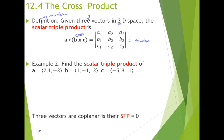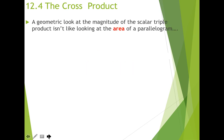How could their scalar triple product be zero? If the cross product is zero, that could happen. If all three vectors are in the same plane, then B cross C is a vector that is perpendicular to that plane, and when you dot that with A — which also lies in the plane — you get zero.